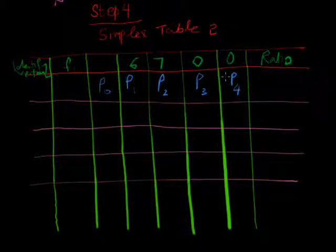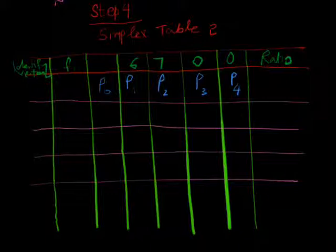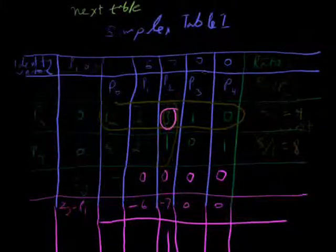Now, which identity vector will write here? First of all, we write here corresponding column, that is P2. See here, this is P2.